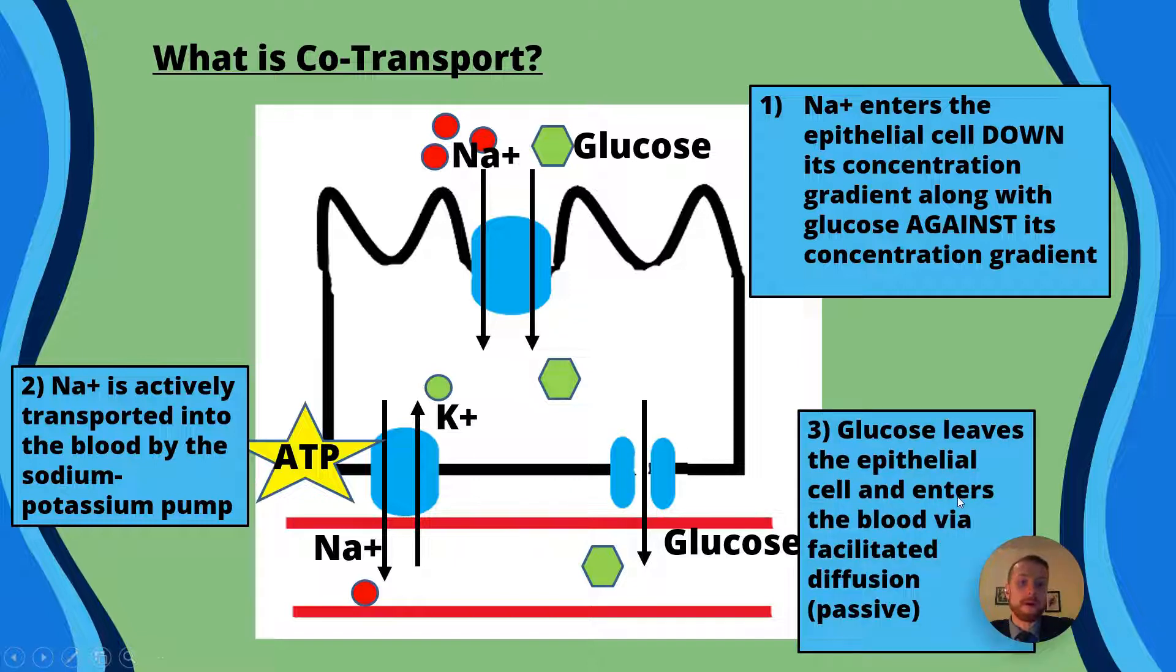Now at the bottom right corner we can see that glucose leaves the epithelial cell via facilitated diffusion and then it enters the bloodstream represented by this red capillary at the bottom. Now it goes through facilitated diffusion because it's too large to cross the membrane and like we looked at in an earlier topic large polar molecules cannot get straight through the phospholipids.